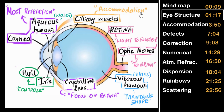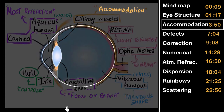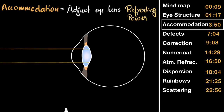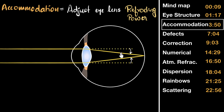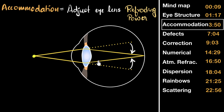Since accommodation is a little detailed, we'll talk about it separately. So what exactly is accommodation? Accommodation is the eye's ability to adjust the eye lens's refracting power. Imagine looking at something far away — the rays of light will be parallel, and the lens has to focus those rays onto the retina. As the object comes closer, the incoming rays become more divergent, so the bending required is more, meaning more refracting power is needed from the lens.